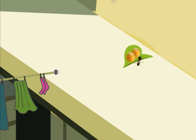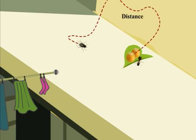The distance traveled by the fly is the length of its path, and the displacement is the shortest distance between the initial and the final points.